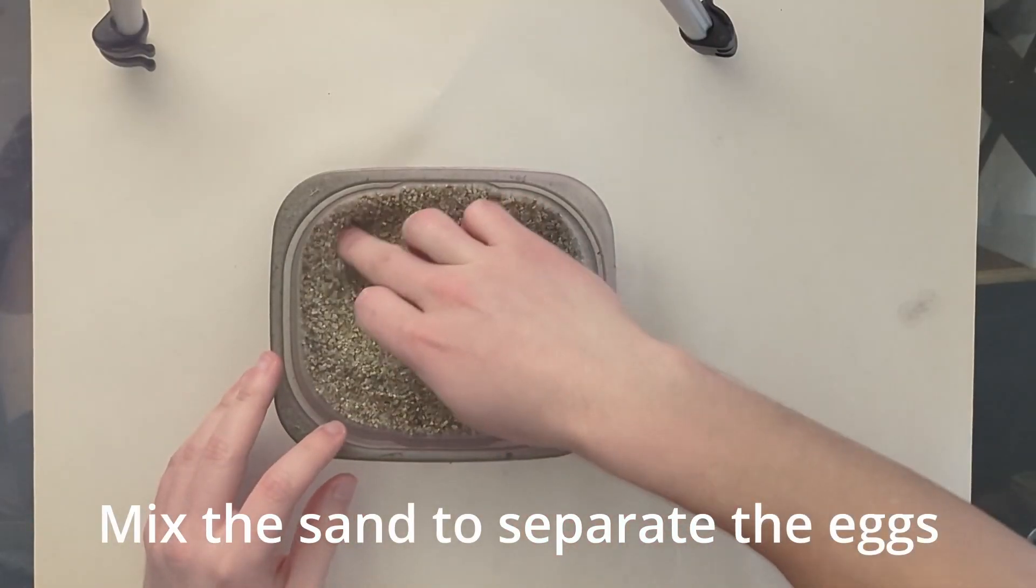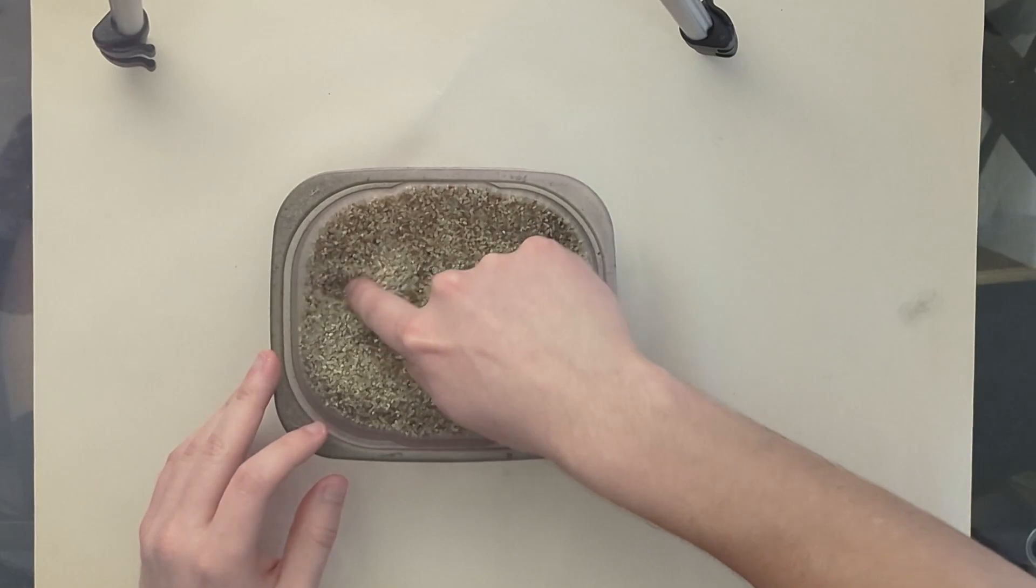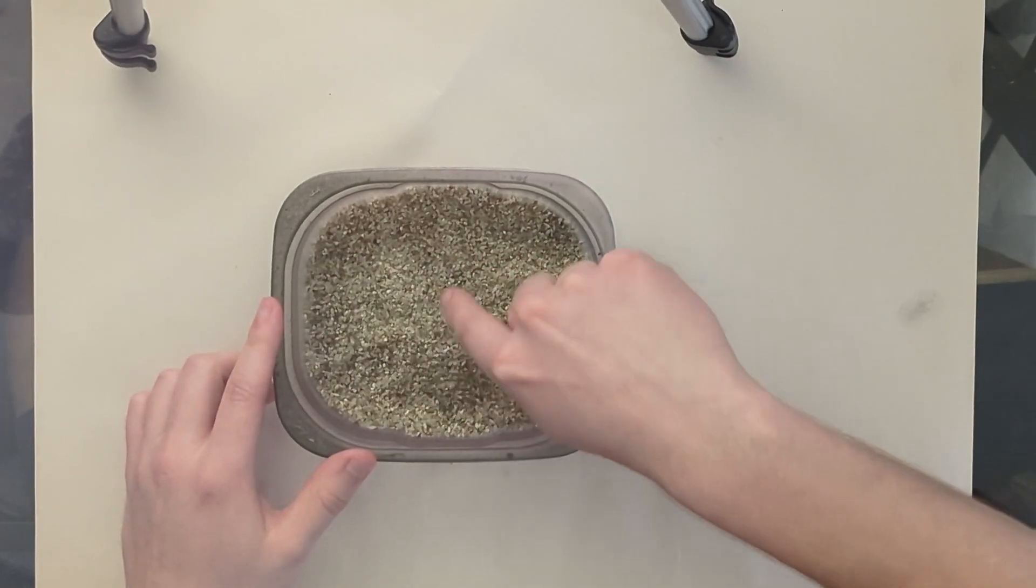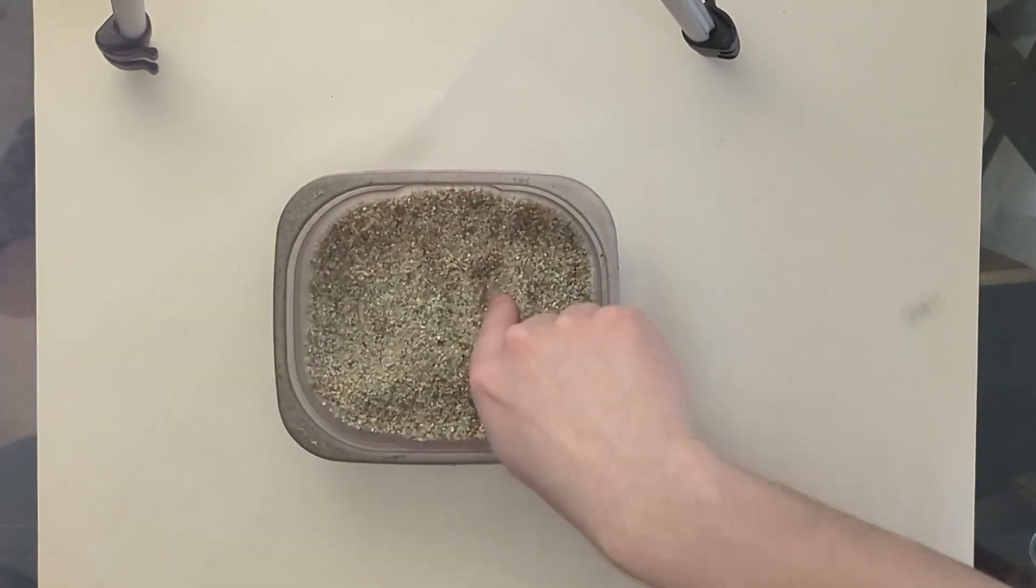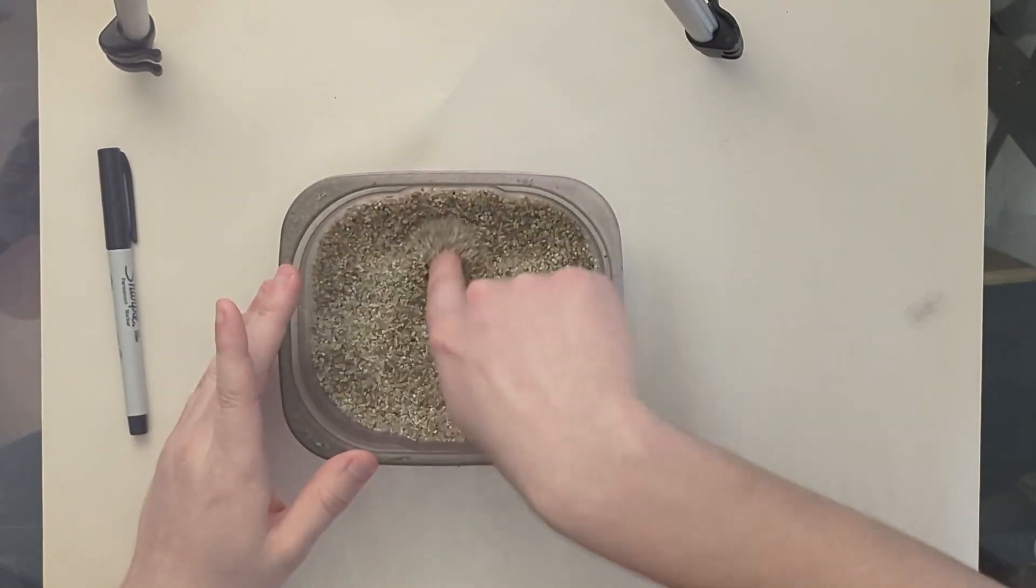So first off, once your media is dry, you need to separate the eggs from the sand. Typically when triops lay eggs they get grouped into bunches and stick to the sand, so this just breaks it up.